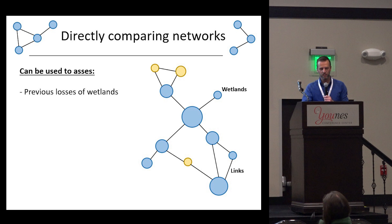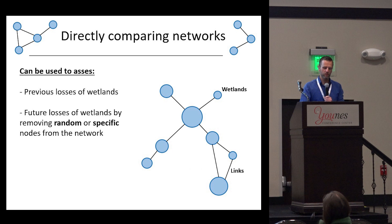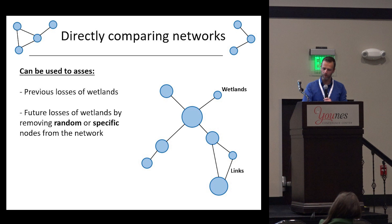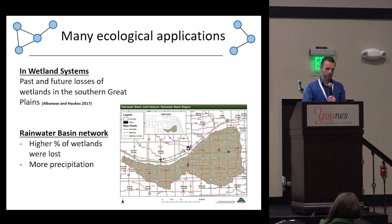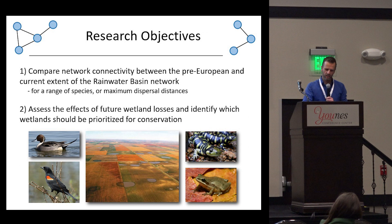We've used these networks to directly compare between configurations — looking at previous losses of wetlands and also pushing the system by comparing future loss scenarios, removing either random or specific sets of wetlands from the network. This approach has been used across a large part of the southern Great Plains by previous work by Gene Albanese and Dave Hokus. We tried similar approaches in the Rainwater Basin, which has a much higher percentage of wetland loss compared to the southern Great Plains and also more precipitation — a slightly different system.